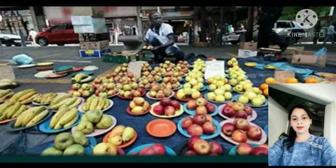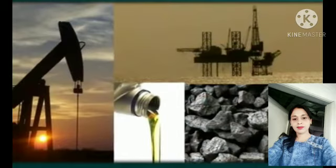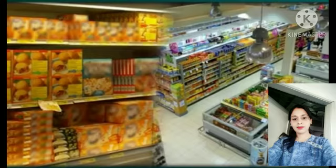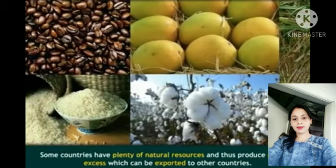Trade is divided into two parts based on the quantity of goods: wholesale trade and retail trade. Wholesale trade is buying from manufacturers in large quantities and selling to retailers in large lots. Retail trade is buying in small quantities from a wholesaler and selling them in small quantities to the consumer.